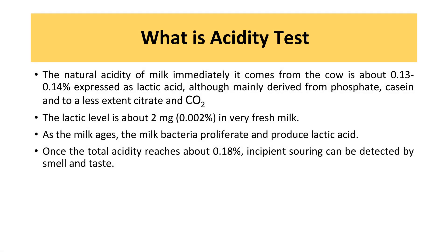The natural acidity of milk when it comes from the cow is about 0.13 to 0.14%, expressed as lactic acid, which is mainly derived from phosphate and casein, and to a lesser extent citrate and carbon dioxide. The lactic acid level is about 2 mg in fresh milk.